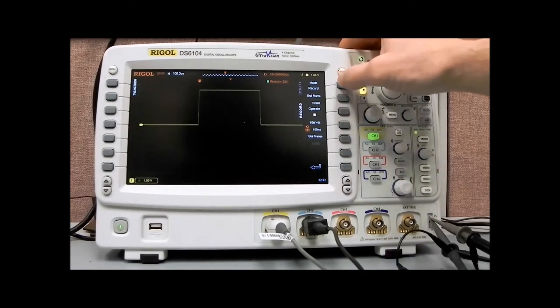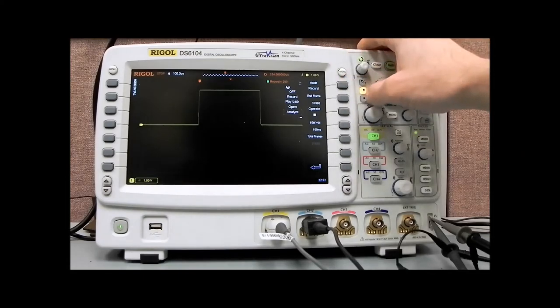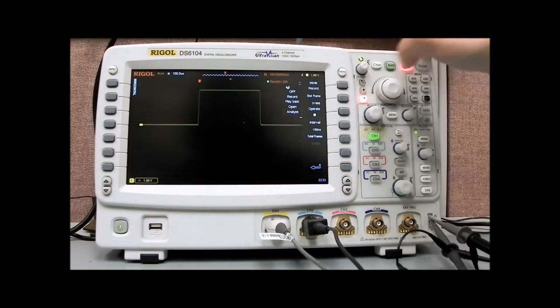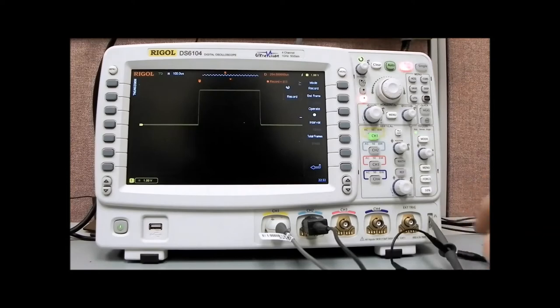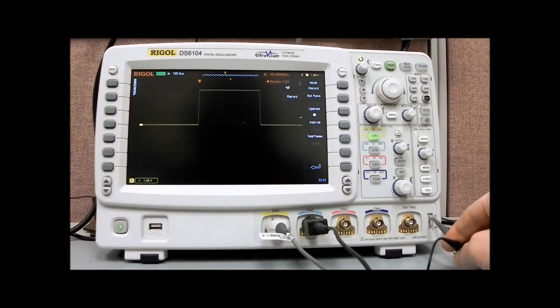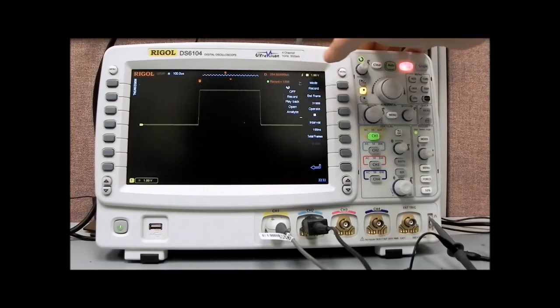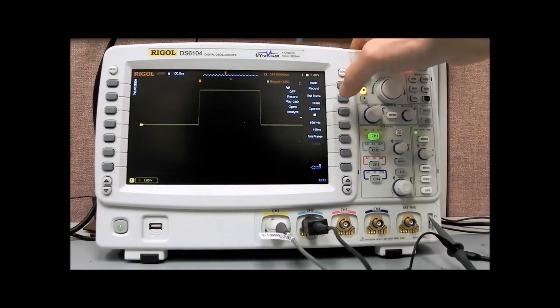I'm going to record some failures. We're going to go back to recording, and now I'm going to select channel one and pull it off the probe compensation point. You can see now we're getting some different values here. Then I'll place it back on, and now I'll stop. We've collected 1890 frames.